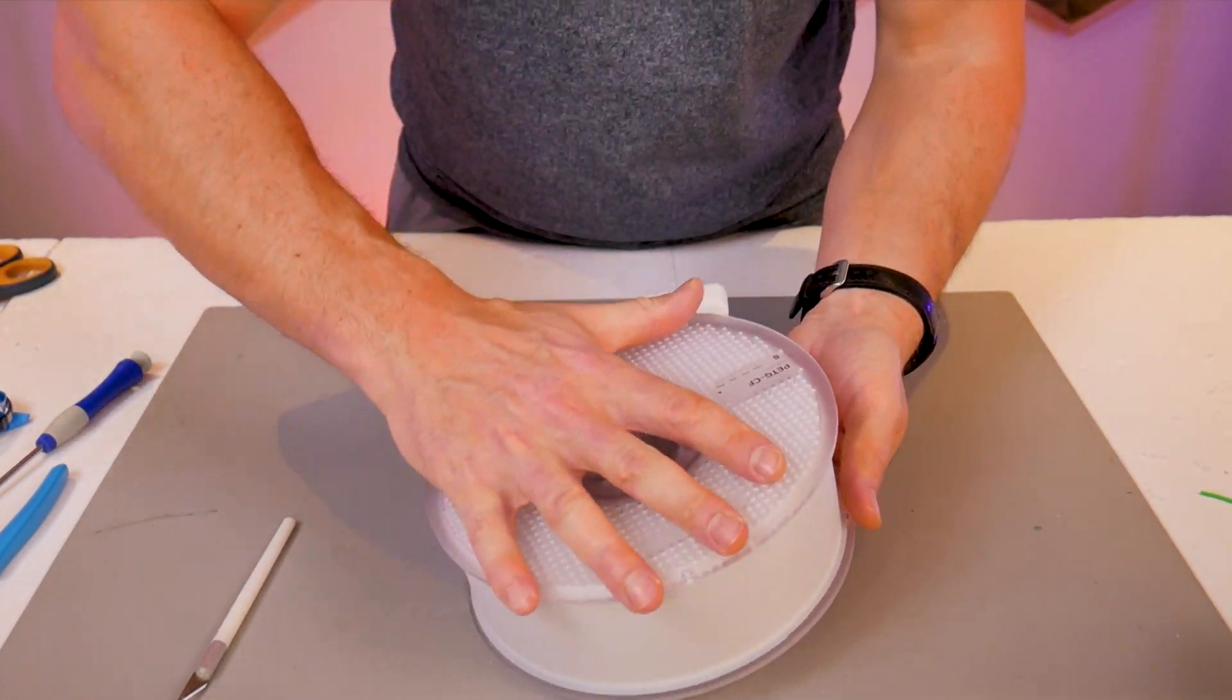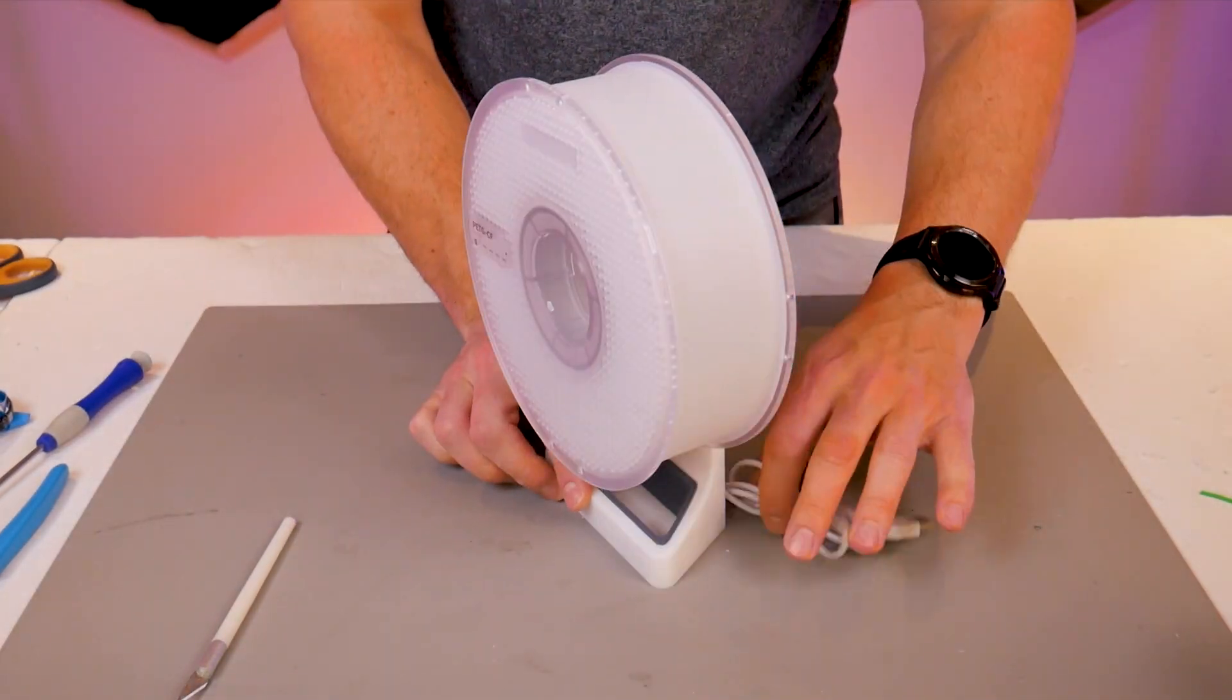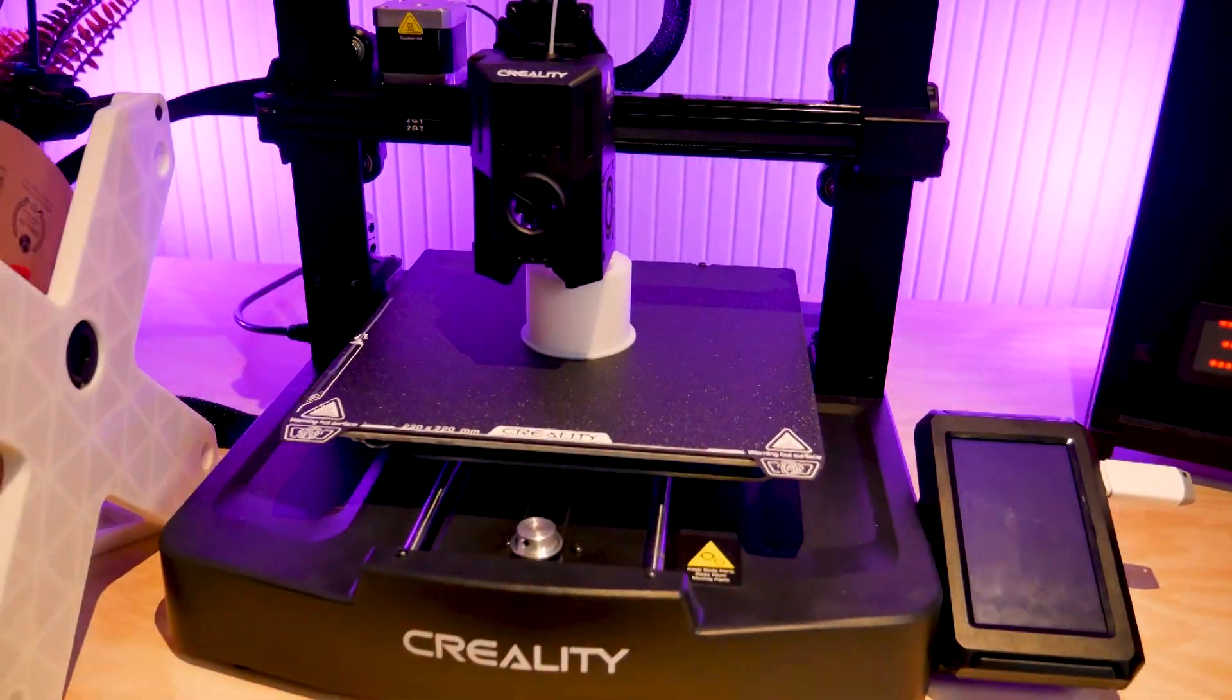Then we can take the front half of the spool, place it on top of the rest of our assembly and twist it in place. If you've done everything correctly, the spool should be locked firmly in place and the LED diffuser should not be moving around.